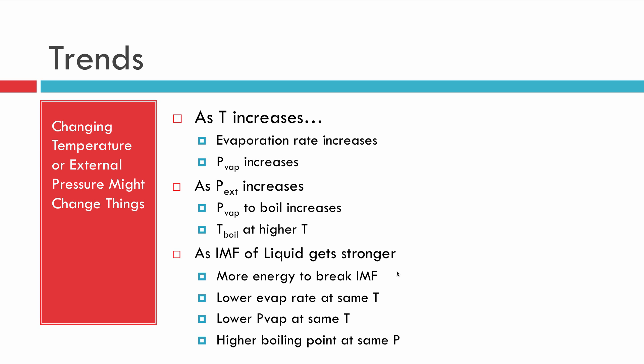As temperature increases, evaporation rate increases, and therefore vapor pressure increases. As external pressure increases, we would need a larger vapor pressure to boil, and since increasing vapor pressure requires increasing temperature, the boiling point would also increase. Finally, if we change our liquid to one with stronger intermolecular forces, we would need more energy to break them, meaning a lower evaporation rate and lower vapor pressure at the same temperature, requiring an even higher temperature to boil — so stronger intermolecular forces lead to a higher boiling point. Watch the video a few times, and I hope it helps you understand these properties of pure liquids.